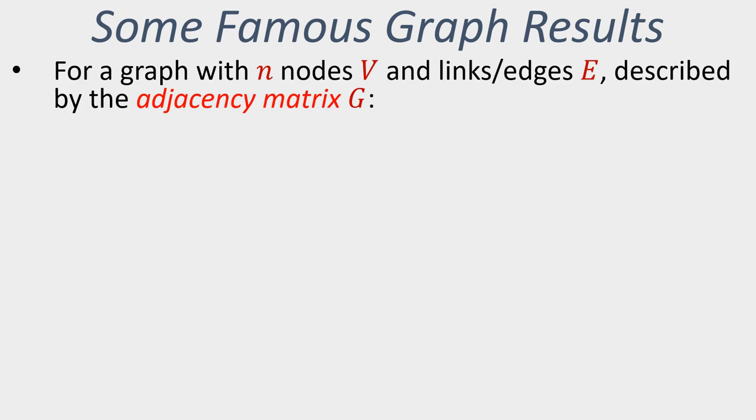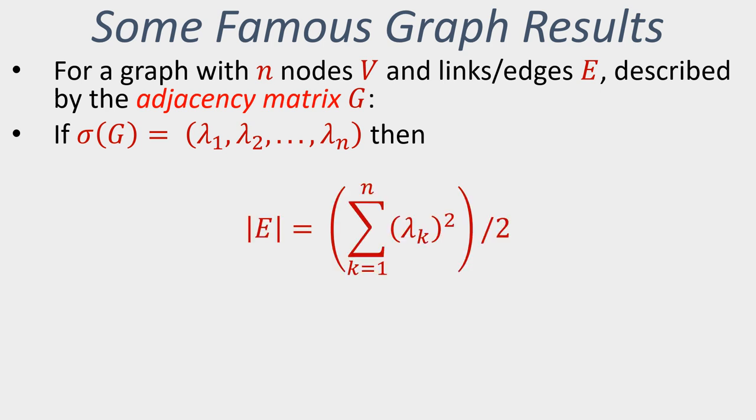We have some quite famous graph theoretic results which derive from spectral analysis. For instance, if we take our graph, which is a set of nodes and a set of edges, we model it by some adjacency matrix. If we let this denote the spectrum of the graph, this is in the standard ordering from largest eigenvalue to smallest eigenvalue.